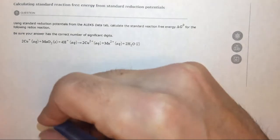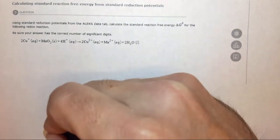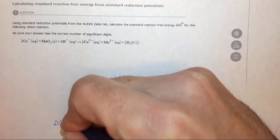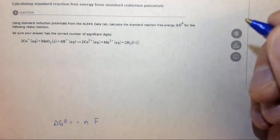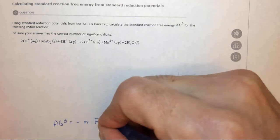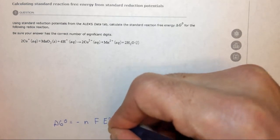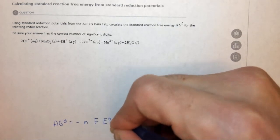And you may recall that delta G naught equals minus n, the number of moles of electrons transferred, times F, Faraday's constant, times the standard reduction potential for the cell.